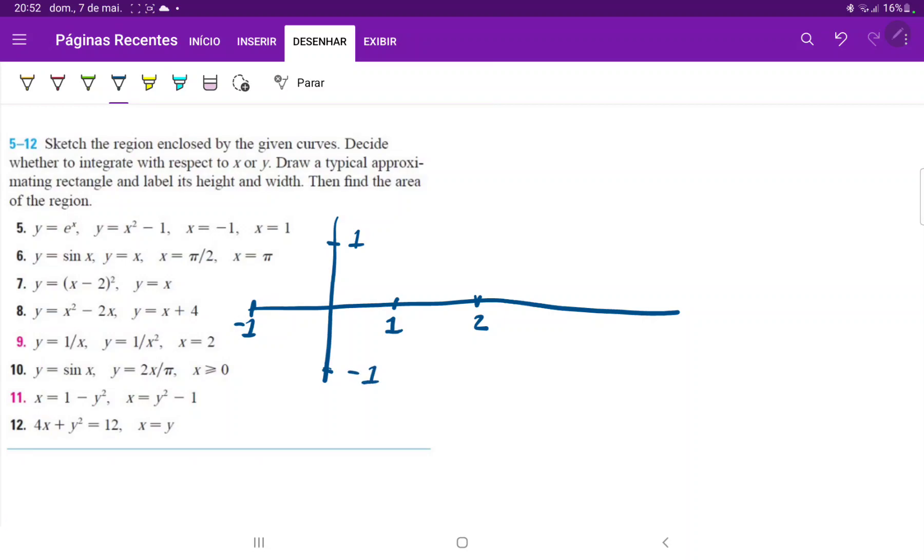We'll begin with our first curve, y equals e to the x. At x equals zero, we have e to the power of zero, which is one, so it looks something like this.